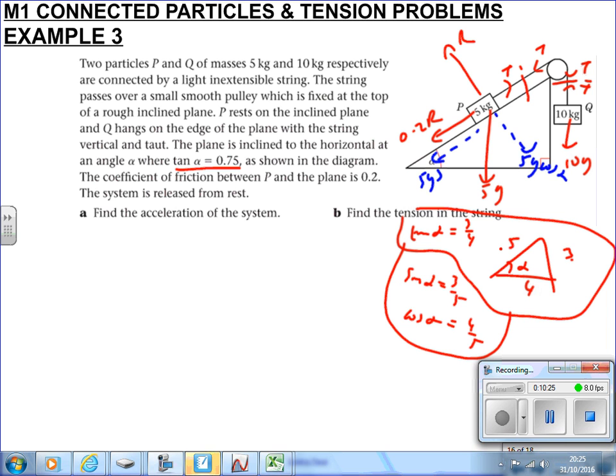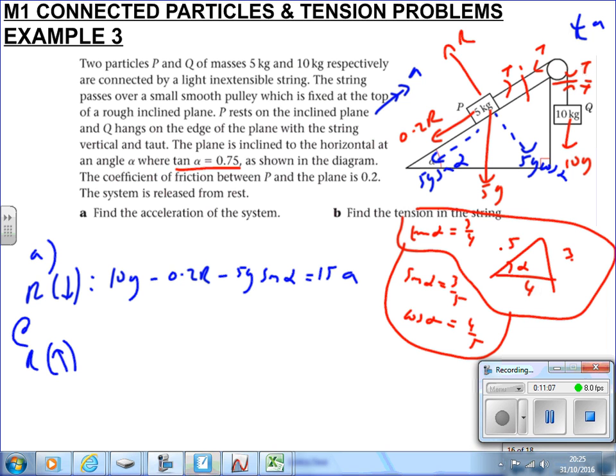So I'm going to need my weight components here. This is 5g cos alpha and a downward element 5g sin alpha. Now I can do the problem. It says find the acceleration of the system—this one's going to accelerate that way, this one's going to accelerate downwards. Resolving down, force going down is 10g. What's opposing it? Friction minus 0.2R and the weight 5g sin alpha, but we know sin alpha is 3 by 5, equals total mass times acceleration. The total mass in motion is 15 kilos.